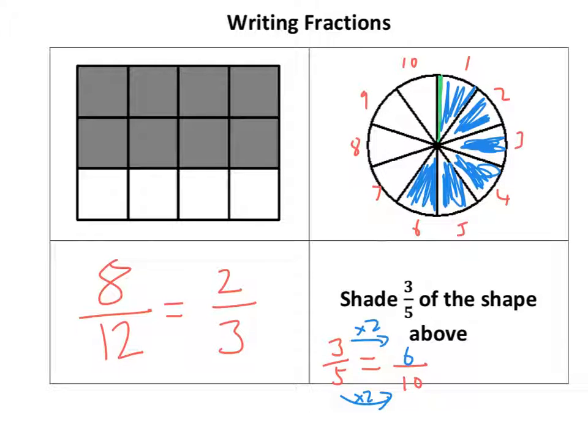I can actually divide this shape into 5 equal bits of which 3 are shaded. So, there's 1, 2, 3, 4, 5, ok, of which 3 are shaded.